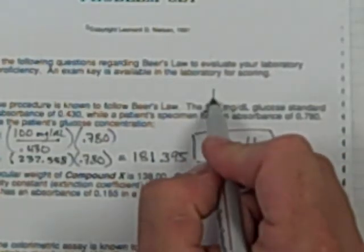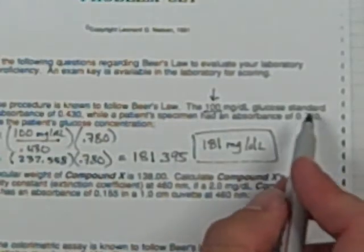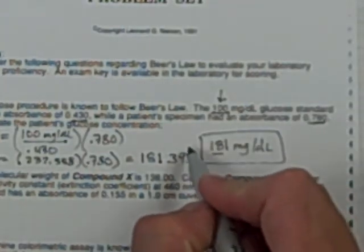And you can do a quick check and say, hey, if 100 milligram per deciliter standard had an absorbance of about 0.430, 0.780 is almost double that. So I look, 181 is almost double 100. It's a quick check to make sure that there isn't something terribly wrong with my math. If I had gotten something like 18 or 1800, I'd have a good idea that I had made some sort of mistake.